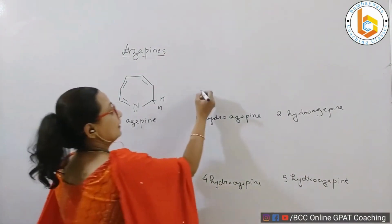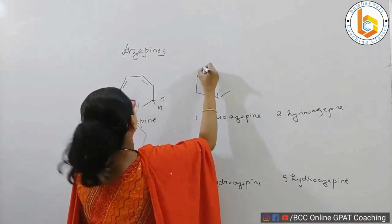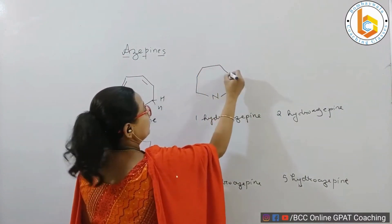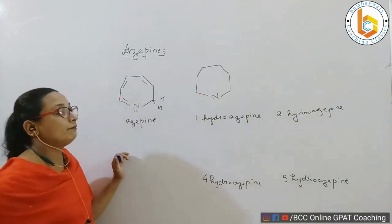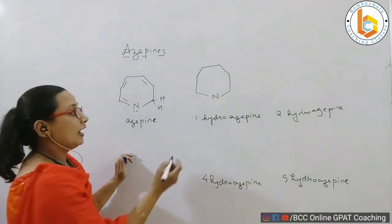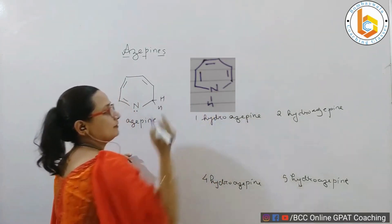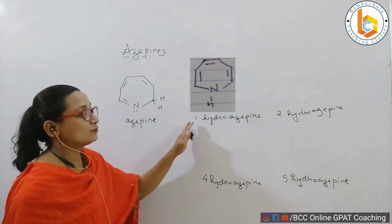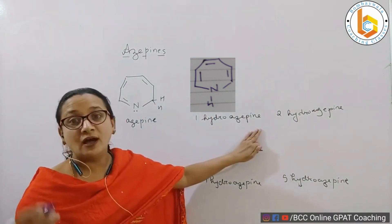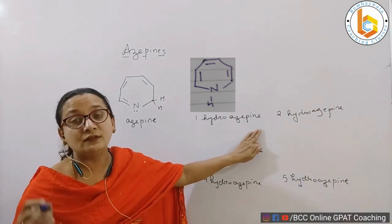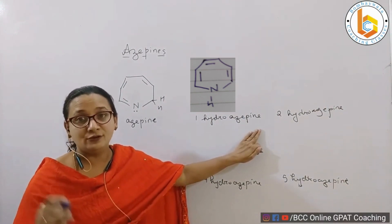Have a look at this azepine — a seven-membered ring. Counting the positions: one, two, three, four, five, six, seven. Here, the hydrogen is at position one, which is on the nitrogen. This is called 1-hydroazepine, because the hydrogen group is present at position one, that is on nitrogen.